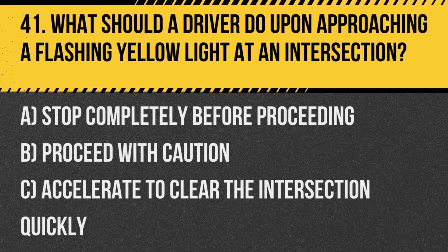Question 41: What should a driver do upon approaching a flashing yellow light at an intersection? A. Stop completely before proceeding. B. Proceed with caution. C. Accelerate to clear the intersection quickly. Answer: B. Proceed with caution. A flashing yellow light advises vigilance and caution, allowing the driver to proceed but with awareness of potential hazards.